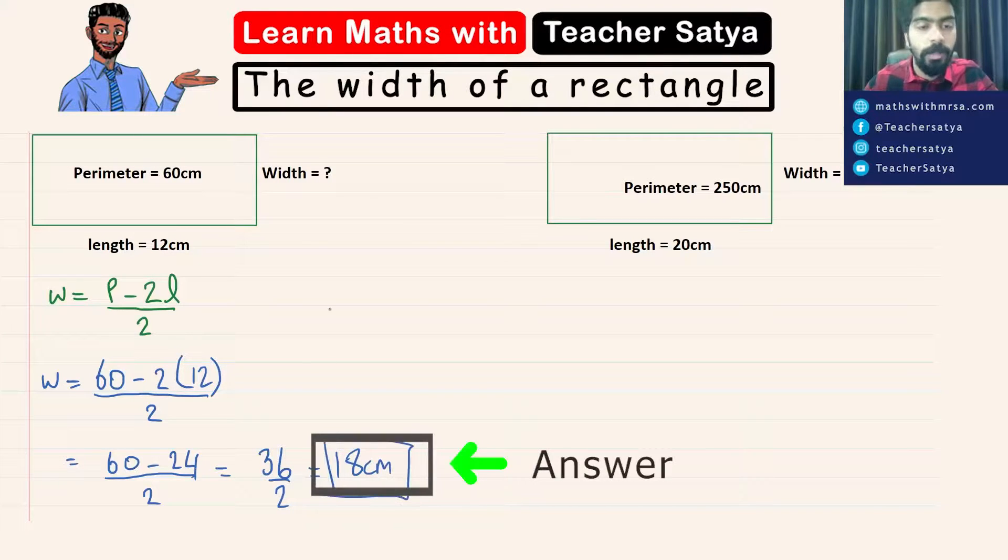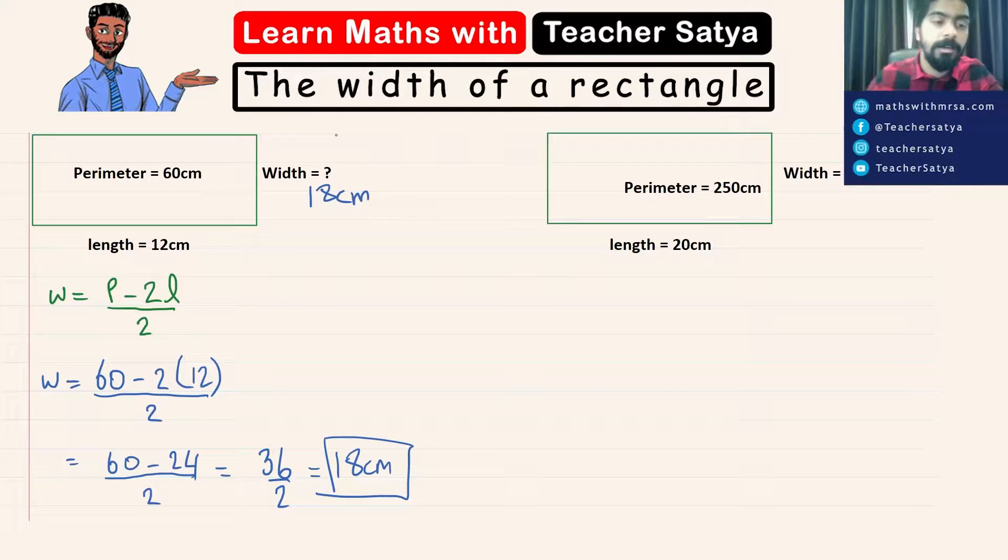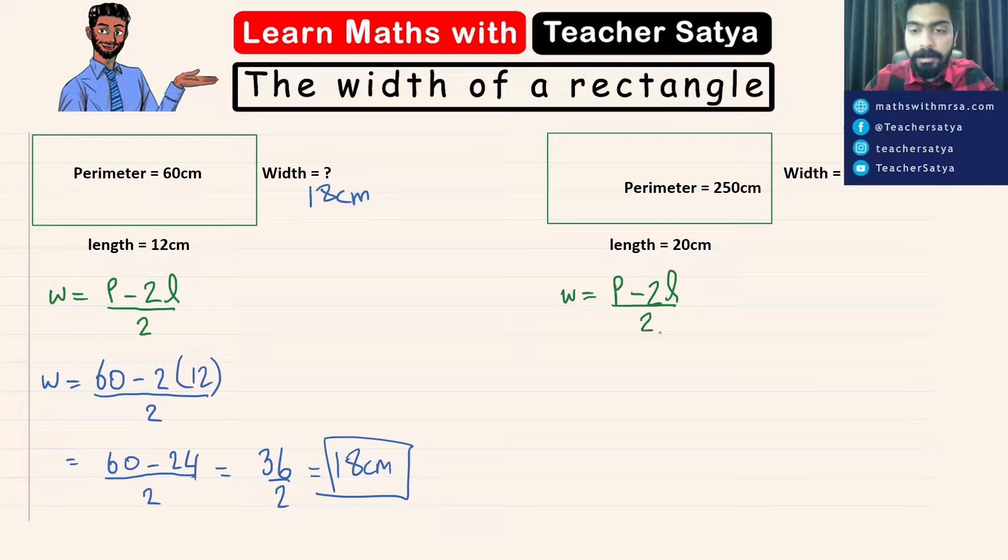So this width would be 18 centimeter. Now let's do one more question. Again, let's start with the formula. The width is equal to perimeter minus 2 times length divided by 2.